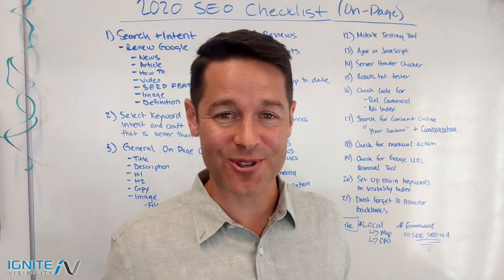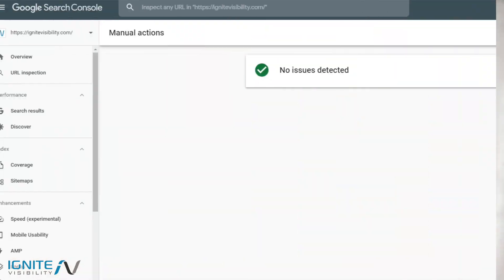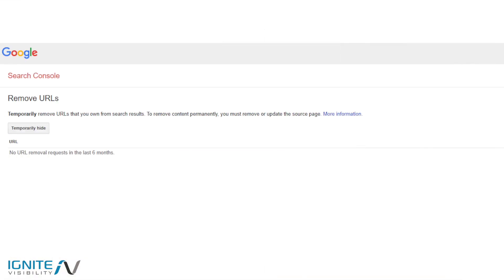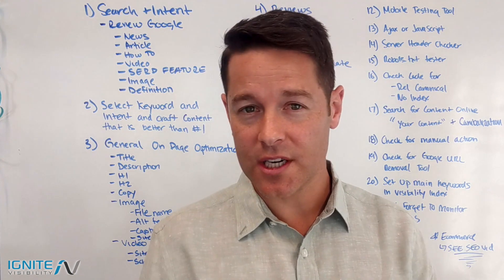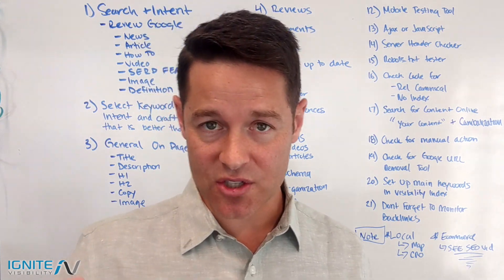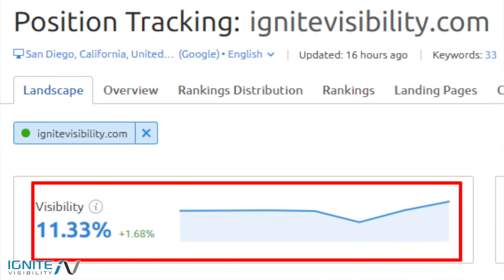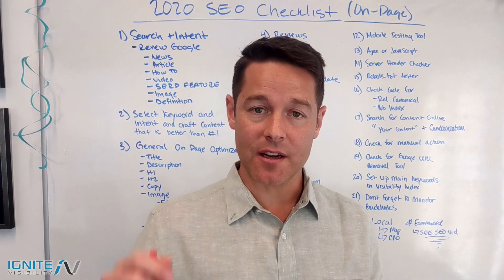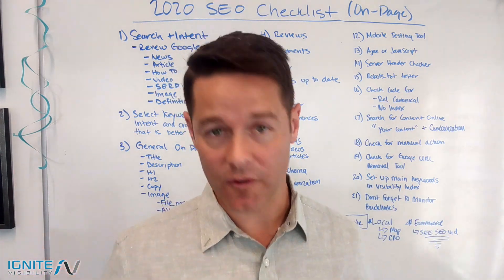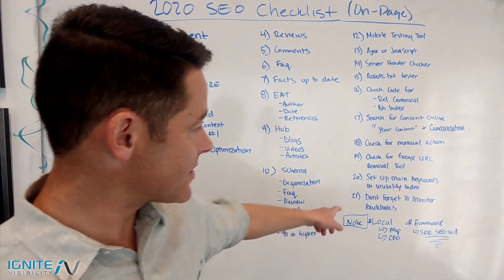Item number eighteen: check for a manual action in Google Search Console — you can click a button and see if you have a penalty holding back your ranking. Item number nineteen: check the Google URL removal tool to make sure nobody has removed that URL. Item number twenty: set up reporting — track your main keywords inside a tool like SEMrush to monitor the visibility index, and set up a filter and shortcut inside Google Analytics to consistently track the pages you've optimized.